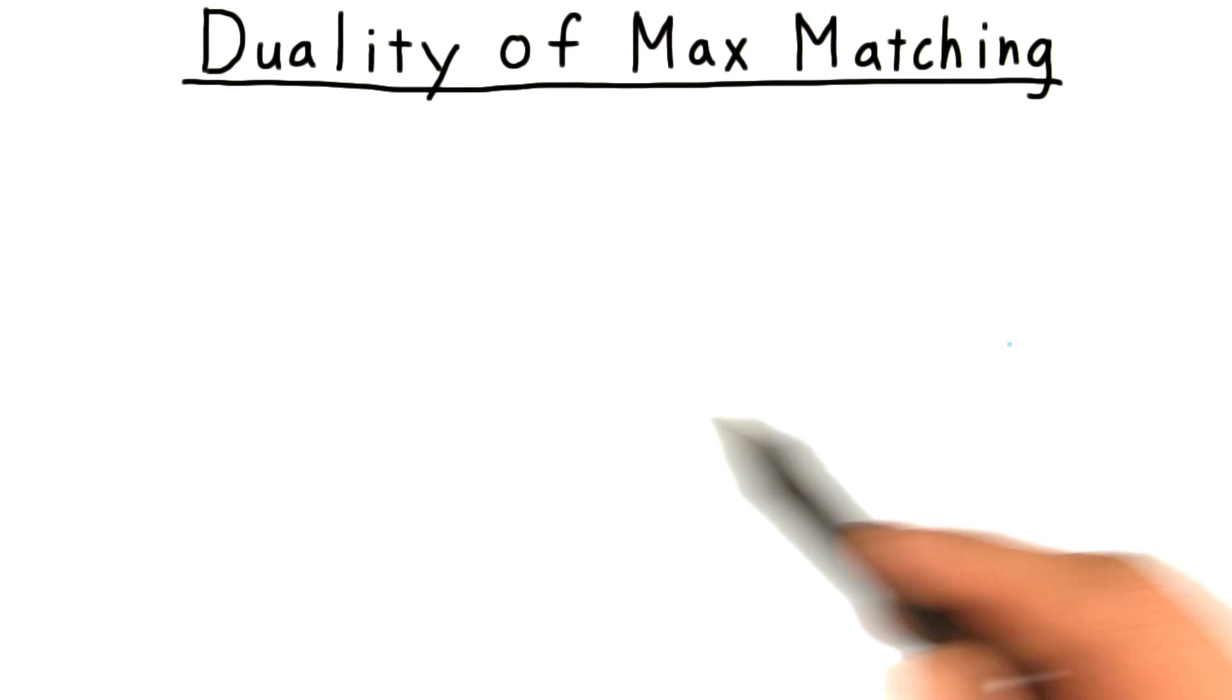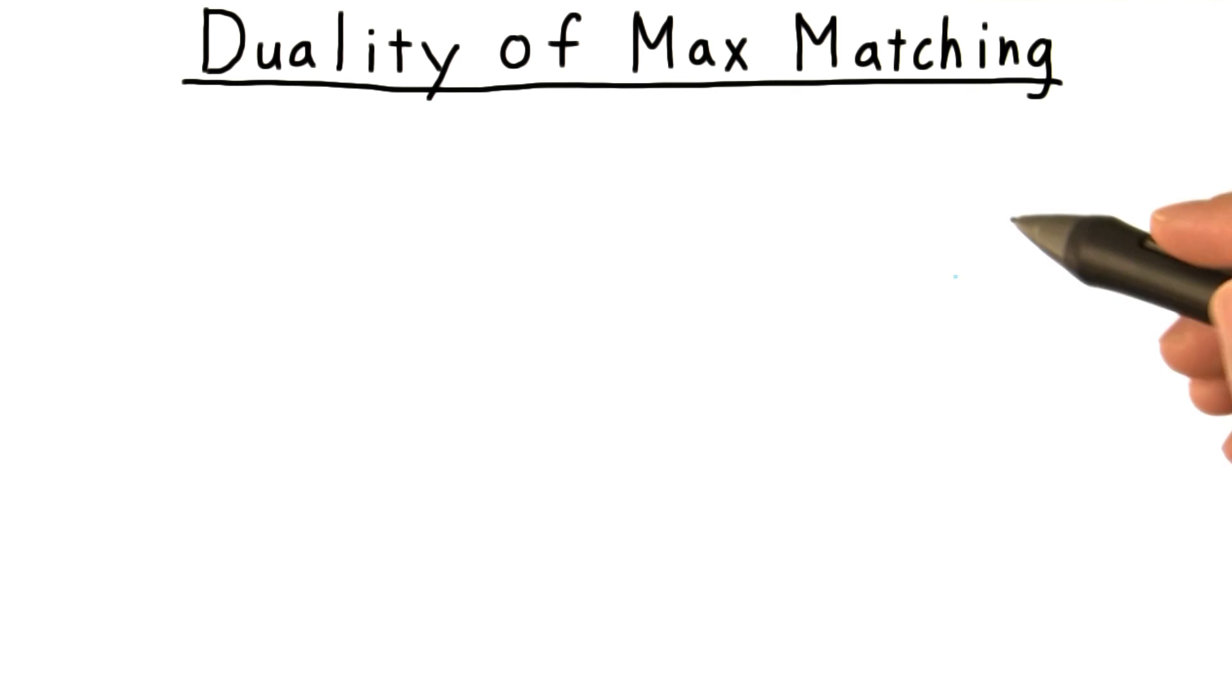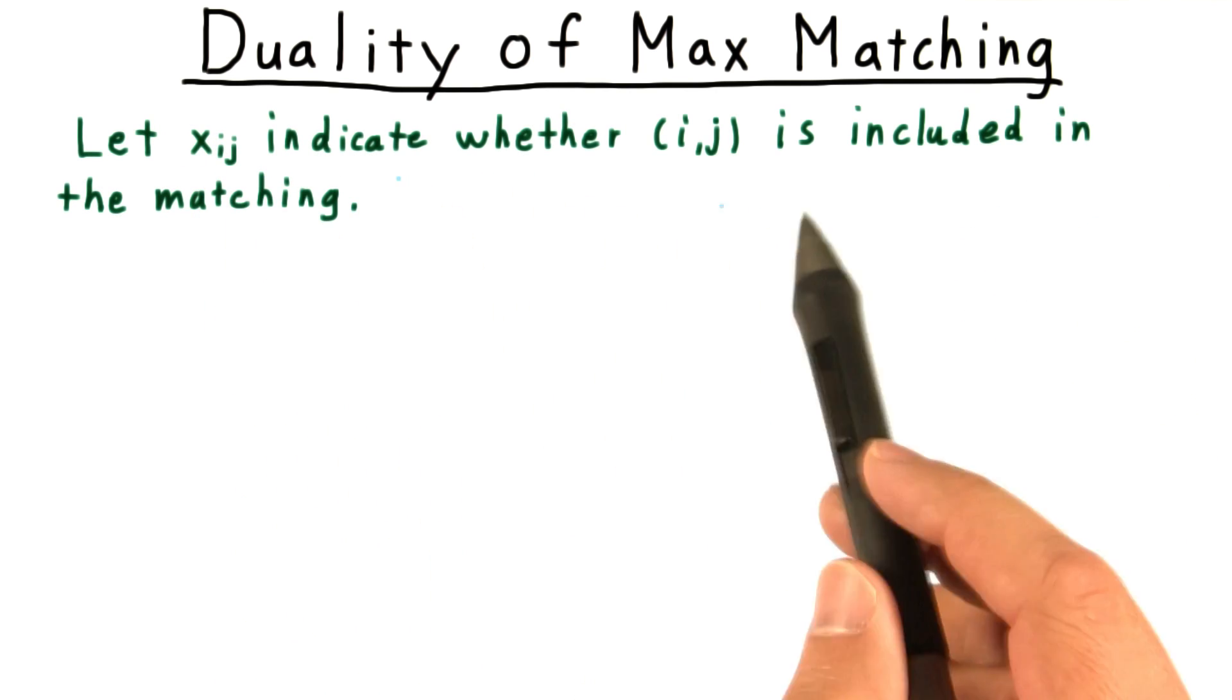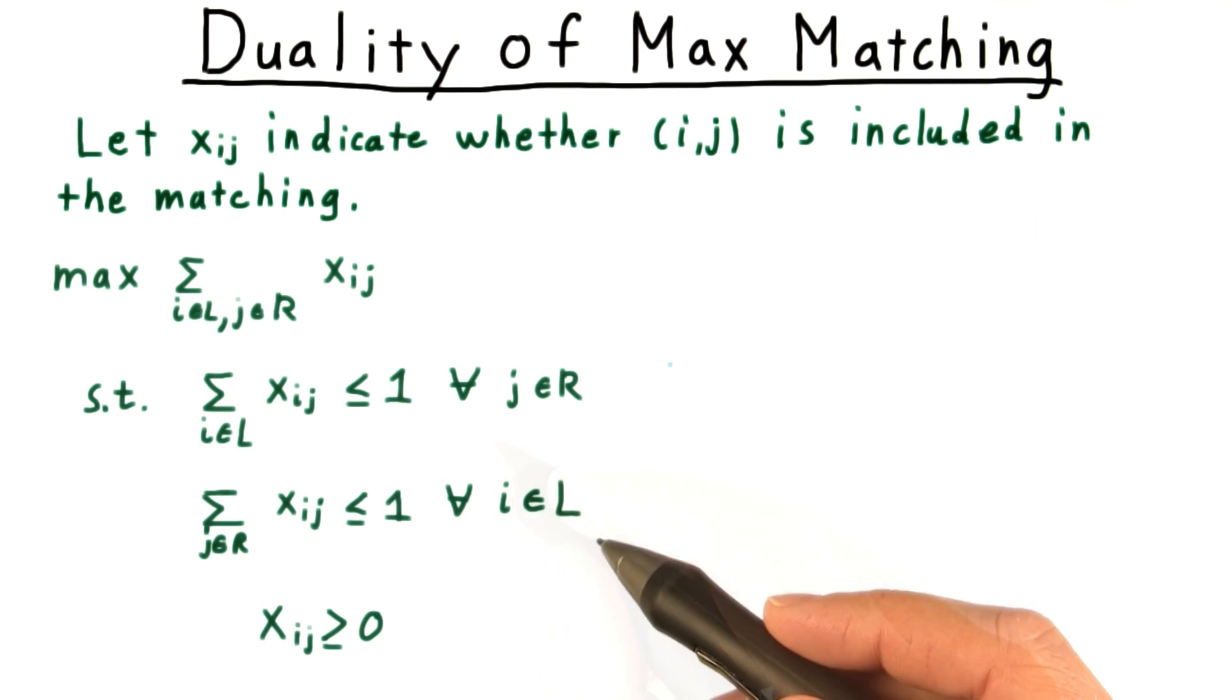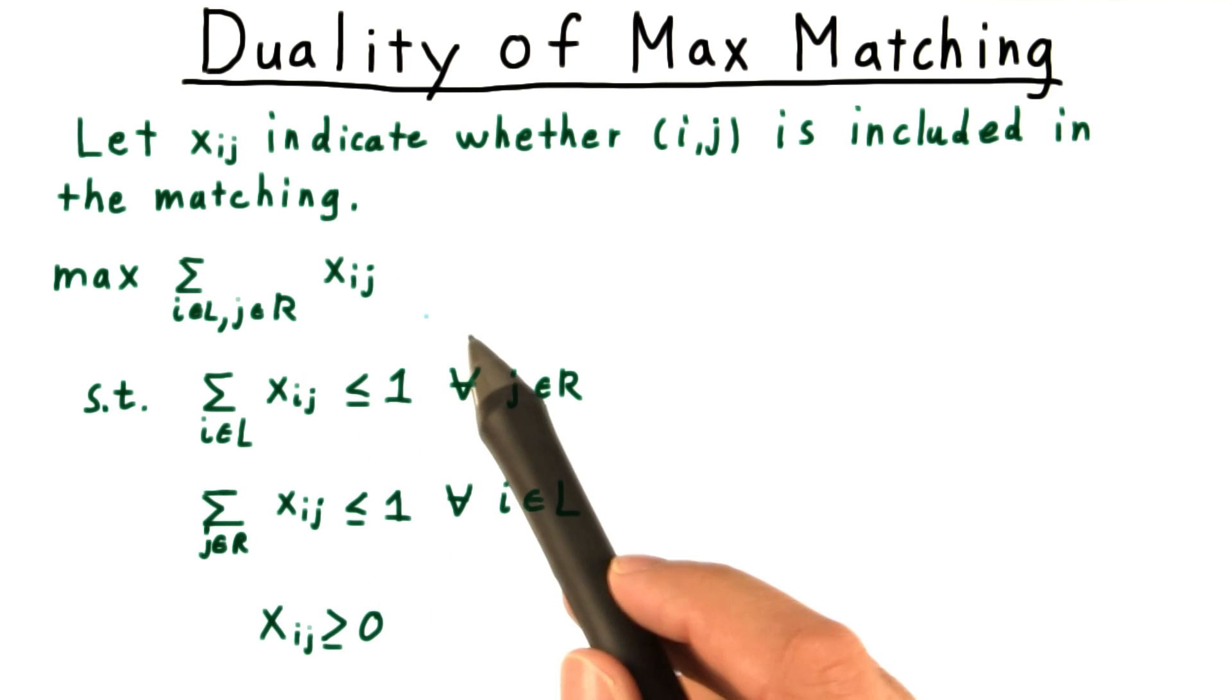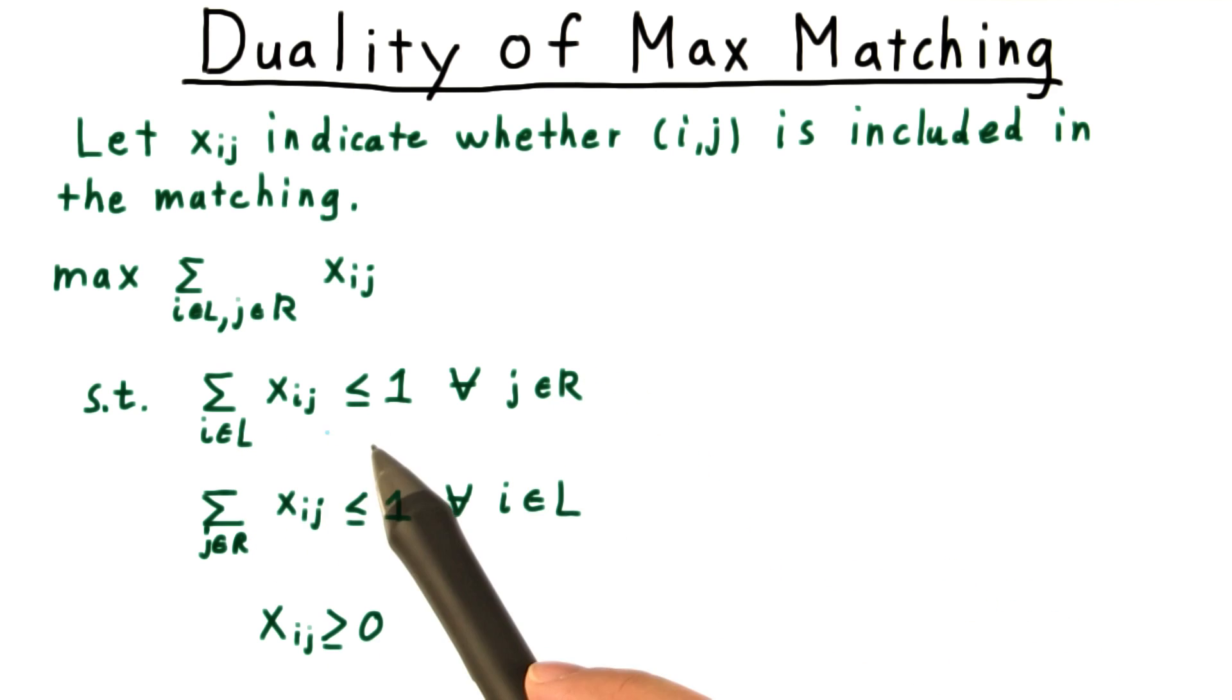Let's take a look at duality in the context of maximum matching in bipartite graphs first. We'll let the variable xij indicate whether the edge ij should be included in the matching. As a linear program, the problem becomes to maximize the number of matched edges subject to the constraints that no vertex in R can be matched more than once, and no vertex in L can be matched more than once. And of course, we can't have negatively matched edges.